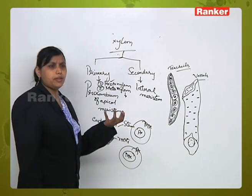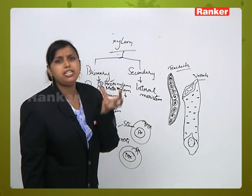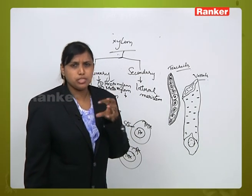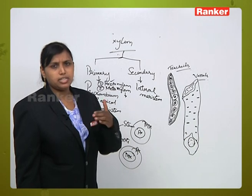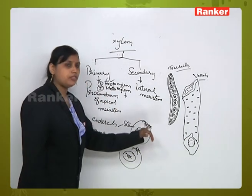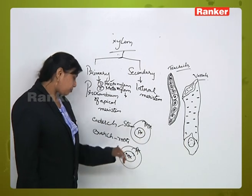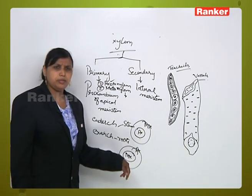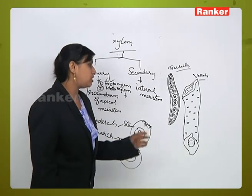Endarch means the protoxylem, the first formed xylem tissue, is present towards the center and metaxylem, the latter formed xylem tissue, is present towards the periphery of the xylem tissue arrangement. Exarch is when metaxylem is center and protoxylem is towards the periphery.